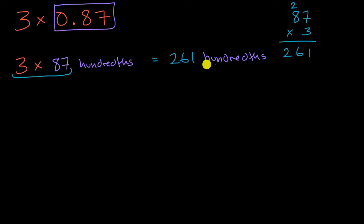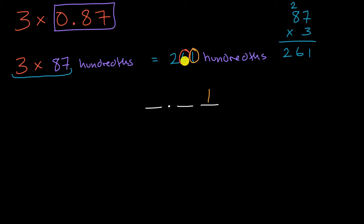How do we express 261-hundredths as a decimal? We can think about it as: one hundredth goes in the hundredths place, 60 hundredths is the same thing as six-tenths, and 200 hundredths is the same thing as two wholes. So starting from the hundredths place and writing out 261, we get 2.61.